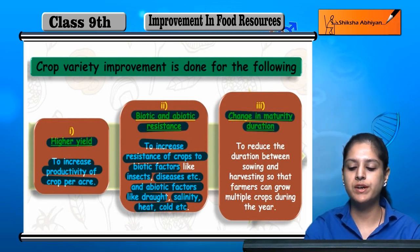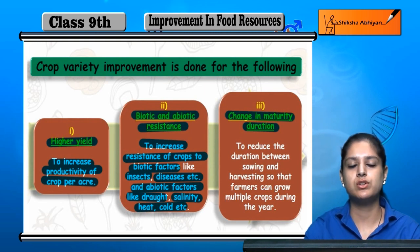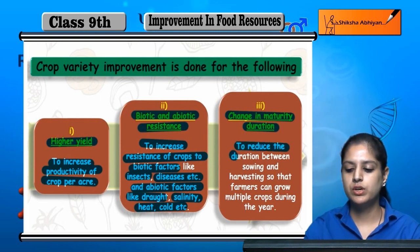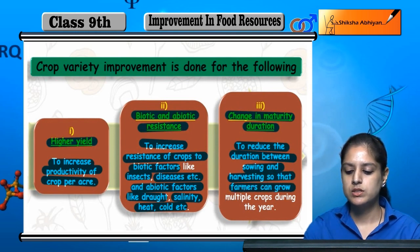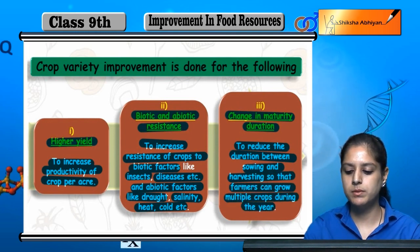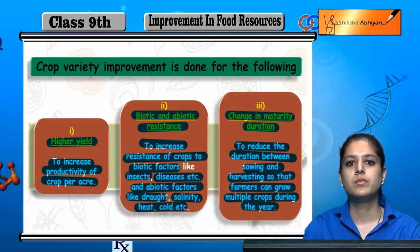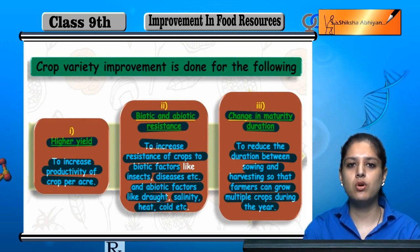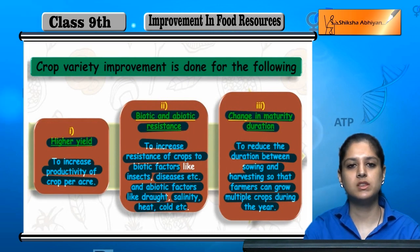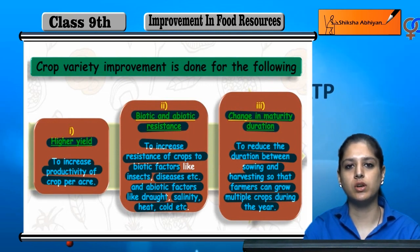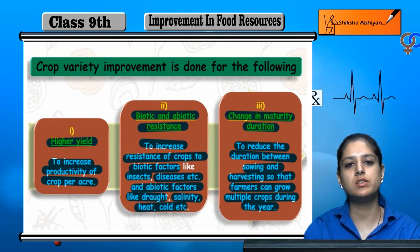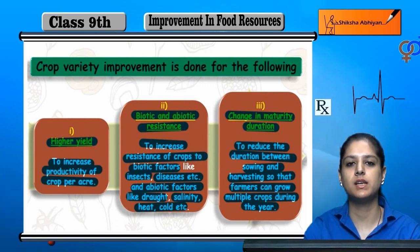Next is change in maturity duration — to reduce the time between sowing and harvesting so that farmers can grow multiple crops during the year. Crops that grow quickly are more beneficial, allowing farmers to grow more and be more productive.